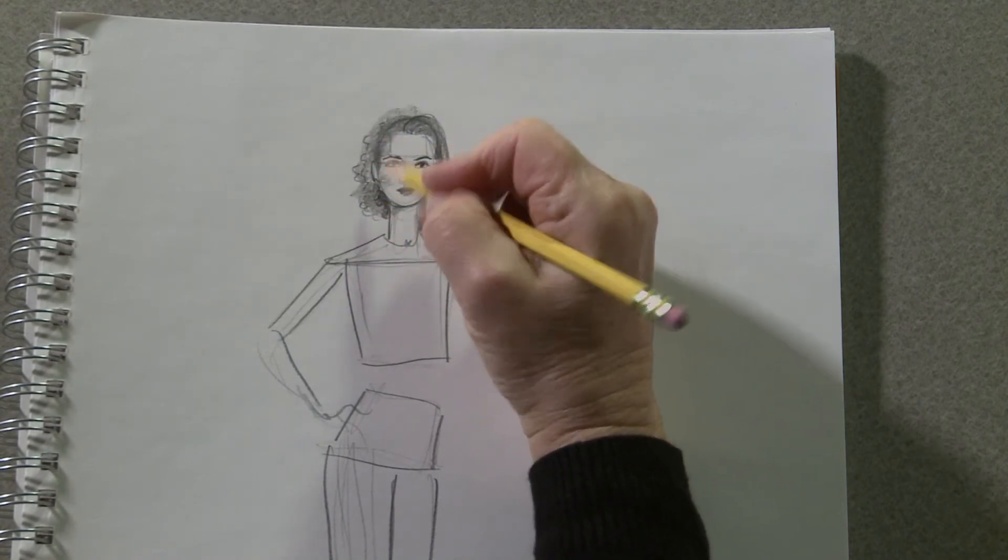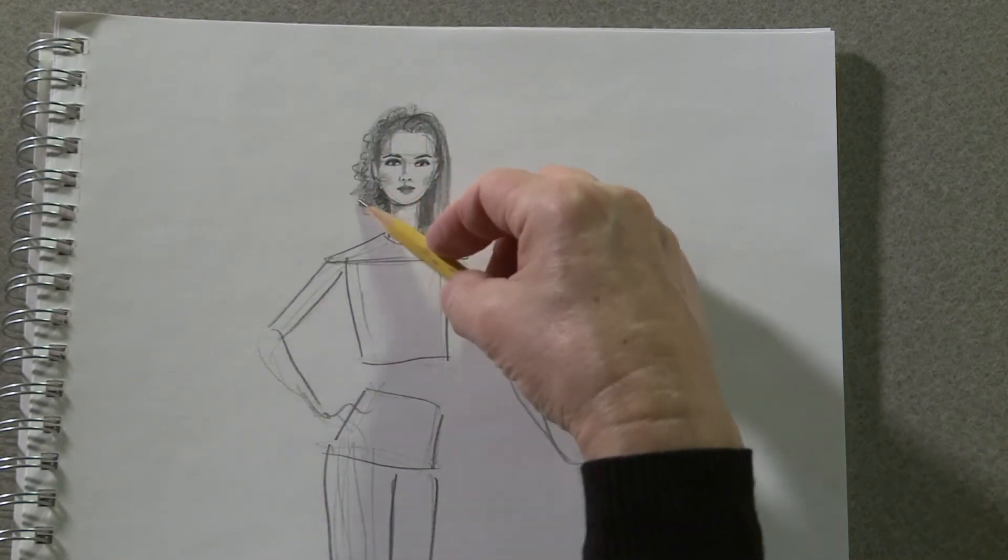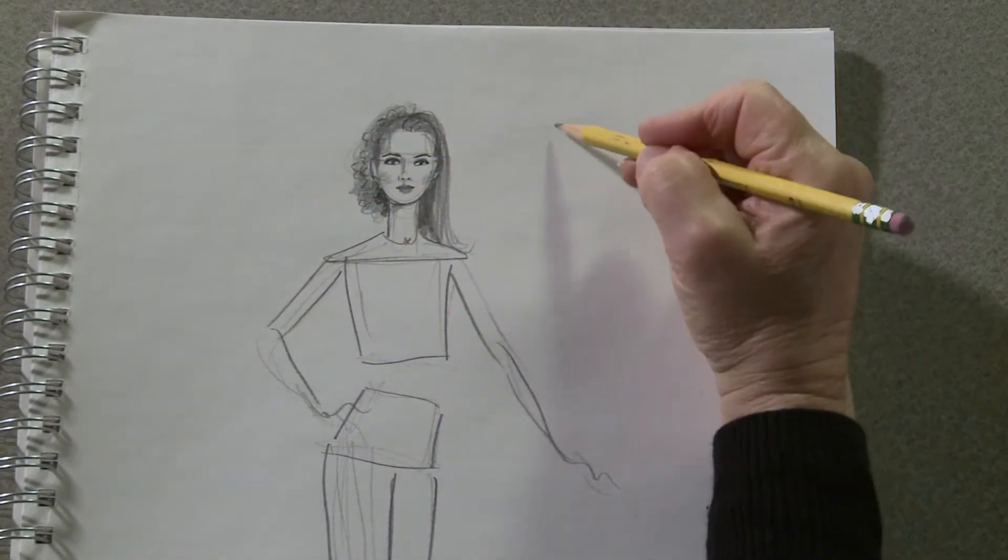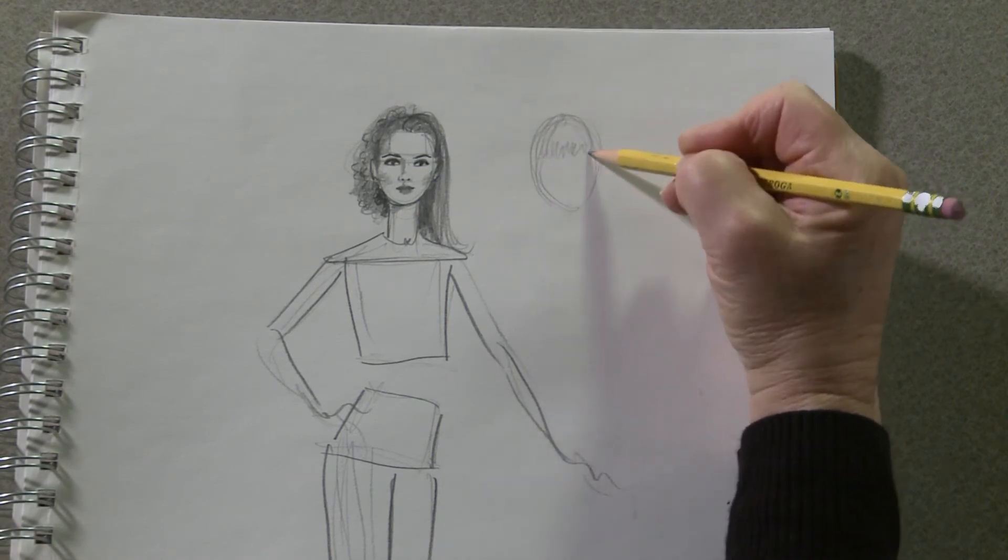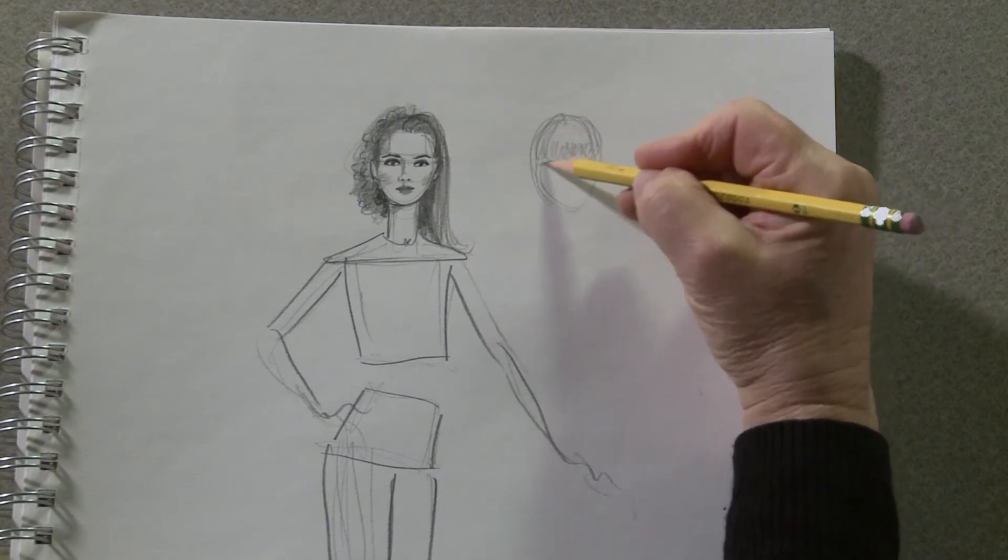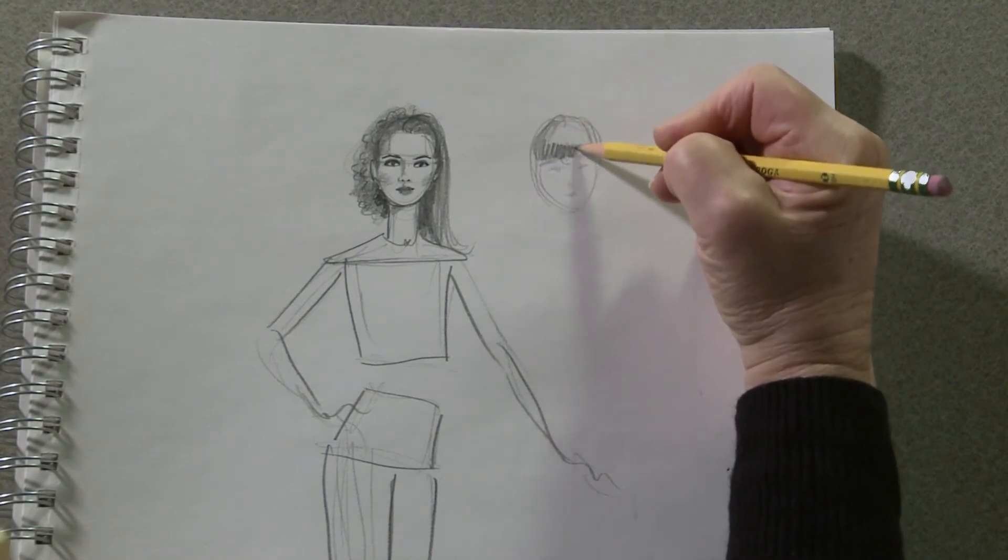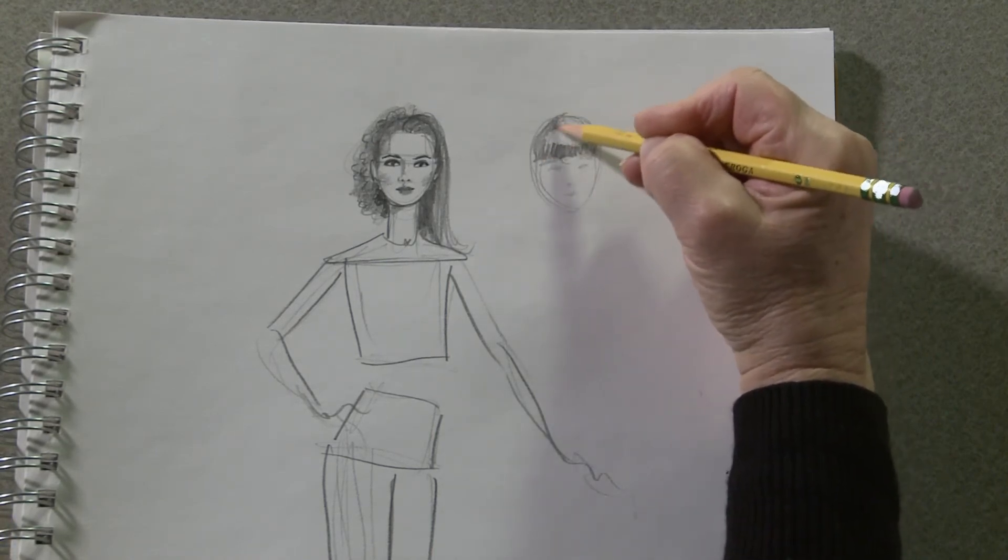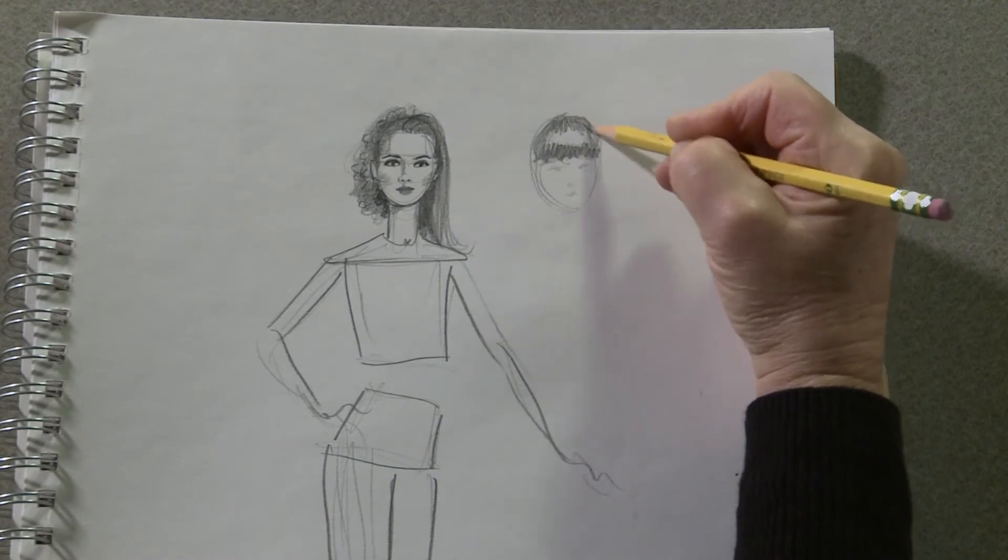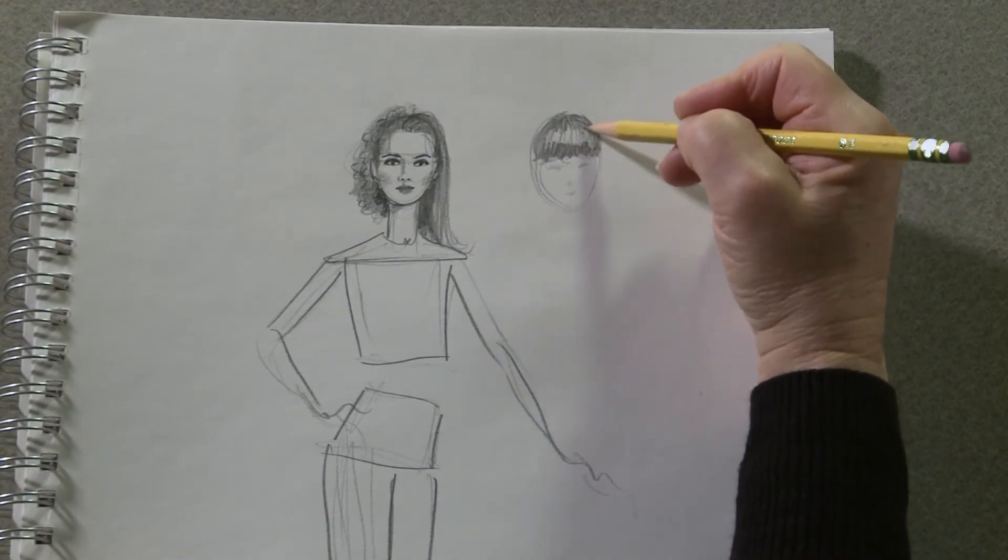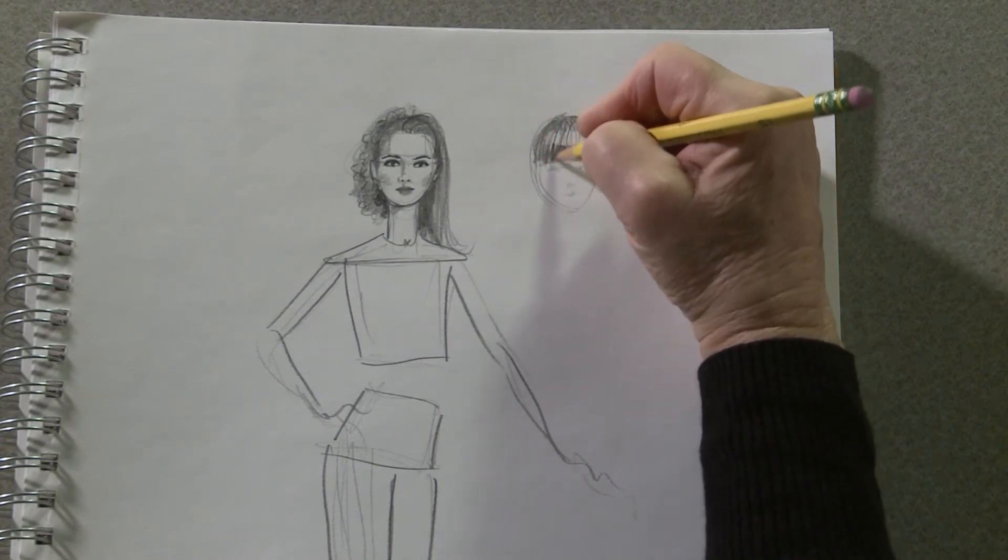If you want bangs, draw the bangs the length you want. And again, use tone at the edges of the bangs, the lower edges of the bangs, and up at the top at the roots. And leave a little white area for shine. And then just a few lines to indicate the texture of the hair.